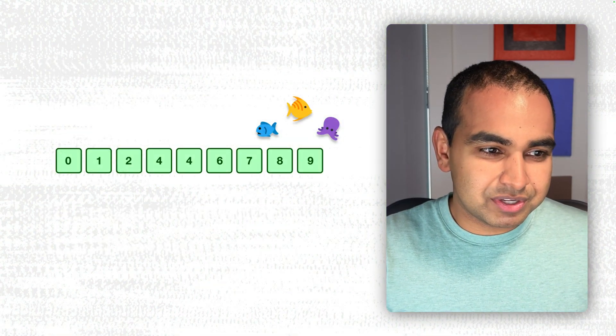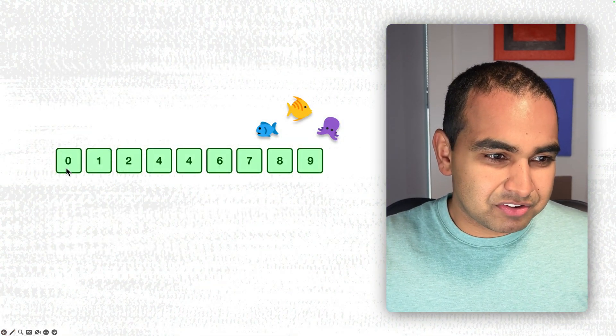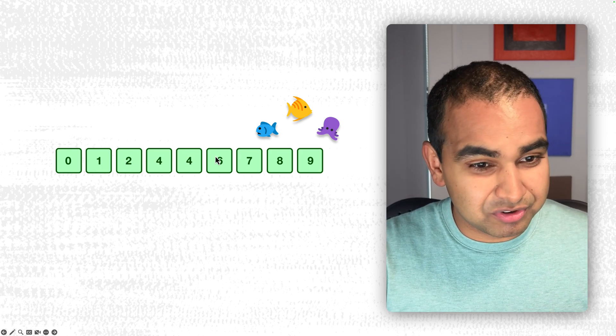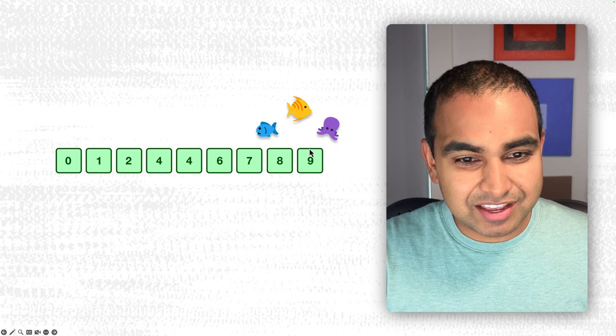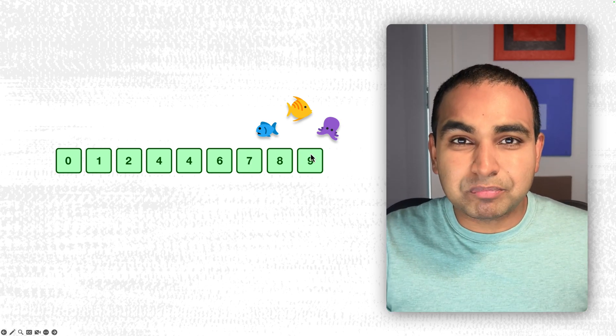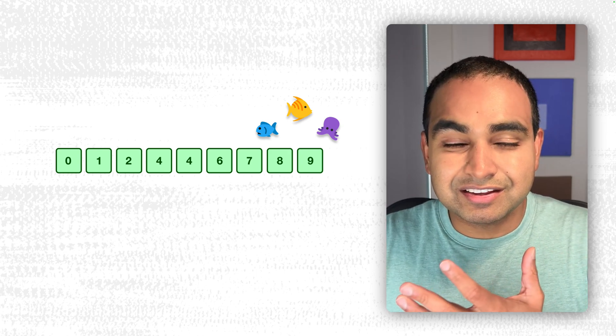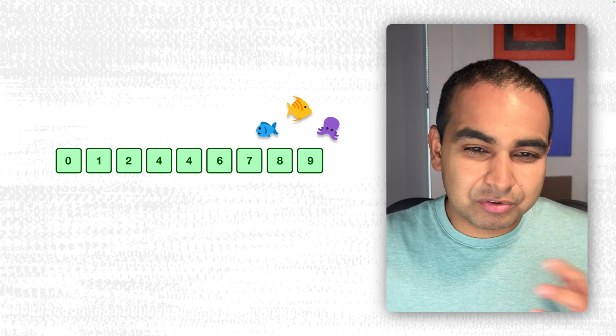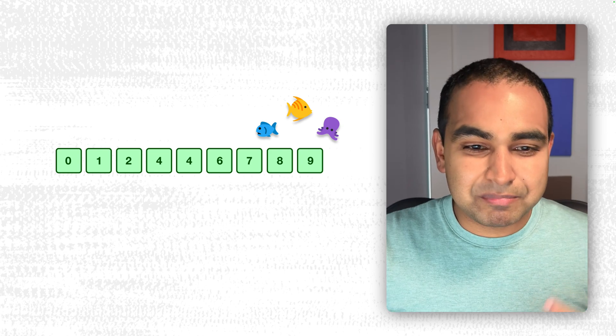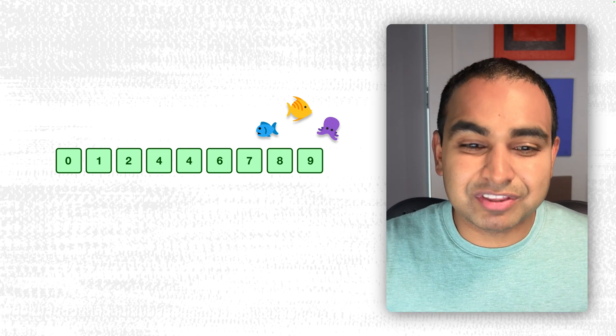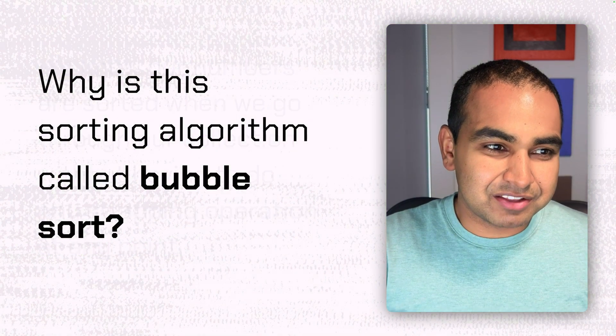So if we go through this one, you can see that the first two adjacent pairs, 0 and 1, proper order, 1 and 2, proper order, 2 and 4, 4 and 4, 4 and 6, 6 and 7, 7 and 8, 8 and 9 are all in the proper order where the first value is less than the second value, which means that no swaps need to be done. In this case, bubble sort will just consider this particular iteration as having run through a sorted list of values.